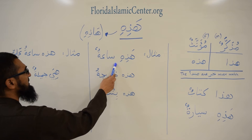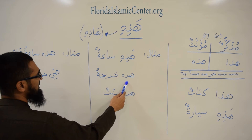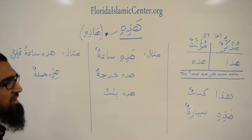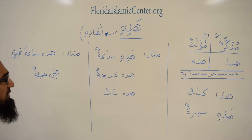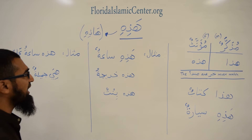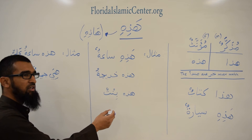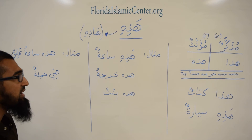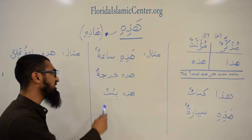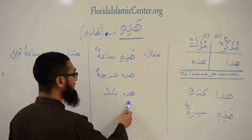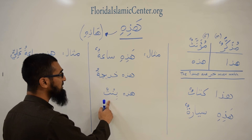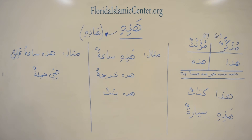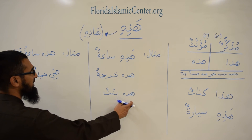More examples: 'Hadhi sa'atun' — this is a watch. 'Hadhi Khadijatu' — for instance, if you're introducing your friend Khadija, you say 'hadhi Khadijatu'. If you say hadha, that would be wrong. But if it's Muhammad, you say 'hadha Muhammadun'. If you want to say 'this is a girl', you say 'hadhi bintun'. Bintun means girl and also daughter.